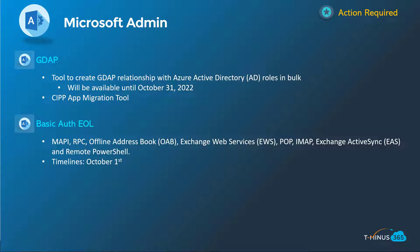Shifting into Microsoft admin updates — GDAP is one I want to touch on again. It's gaining traction because of the impending timelines. You have a bulk migration tool to move from traditional DAP relationships into GDAP relationships, but that's only available until October 31st. Microsoft's tool uses command line and CSVs, but the guys over at CIPP — the CyberDrain Improved Partner Portal — built a much more user-friendly migration tool that lets you move across many customers and select all the roles for your new GDAP relationships. Highly encouraged to check that out.